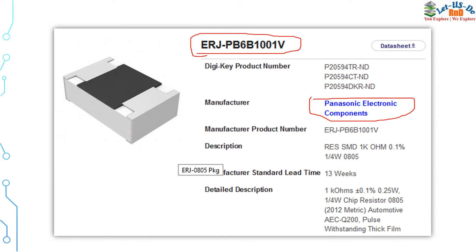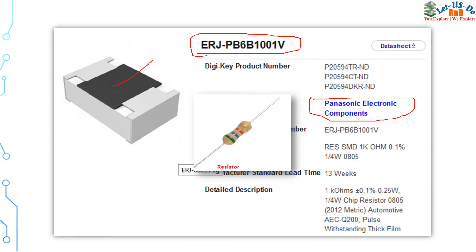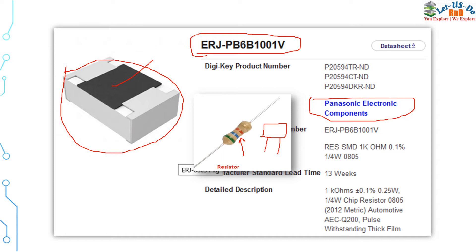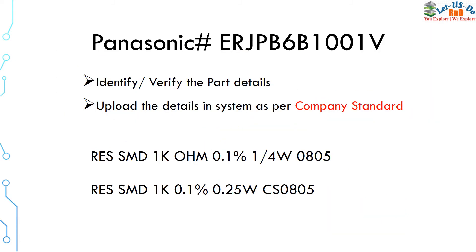This is a resistor. A resistor can look like this — this form is known as an axial resistor, where the component leads pass through the component. This one is known as a chip resistor. There is one more form which looks like this, with two leads, and it is called a radial resistor. An easy way to remember the radial resistor: its two leads and body look like the shape of the letter R.